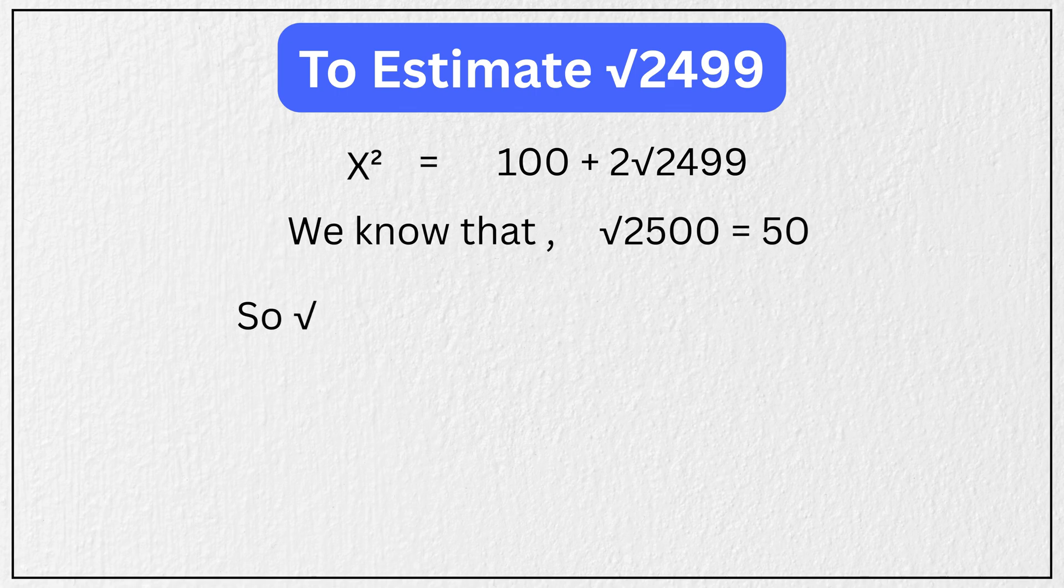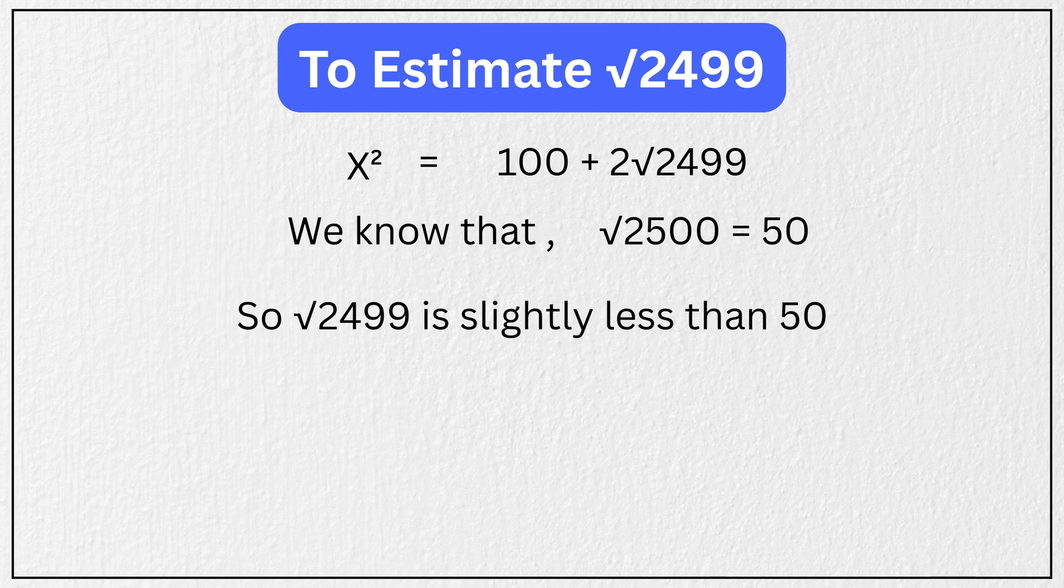So √2499 is slightly less than 50. This means x² is less than 100 + 2×50 = 200.